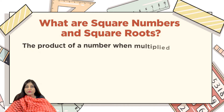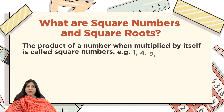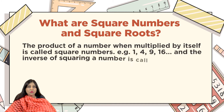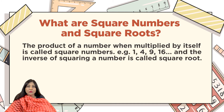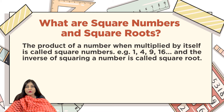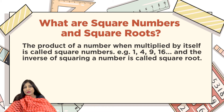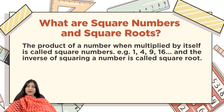The product of a number when multiplied by itself is called a square number. For example, 1×1=1, 2×2=4, 3×3=9, and 4×4=16, and so on. So if a number is multiplied by itself, those numbers are called square numbers.